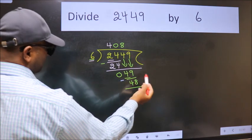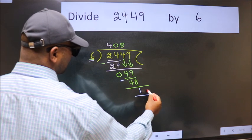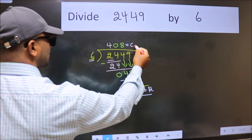No more numbers to bring it down, so we stop here. This is our remainder and this is our quotient.